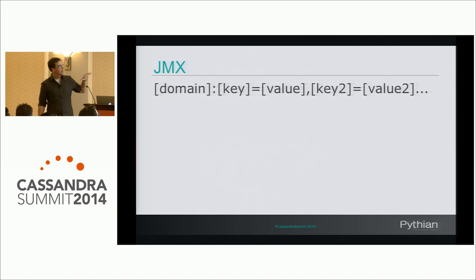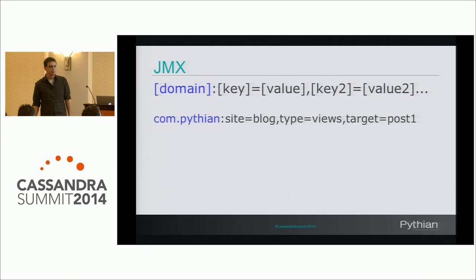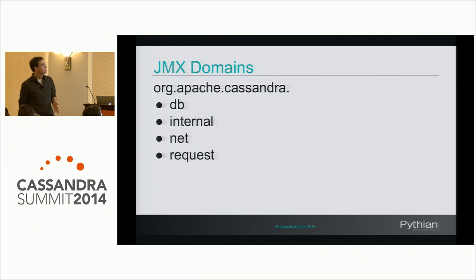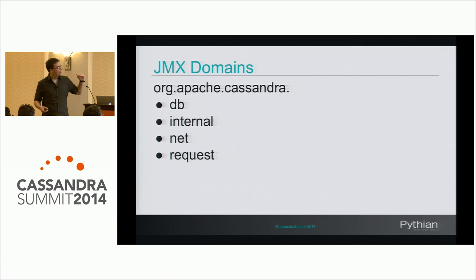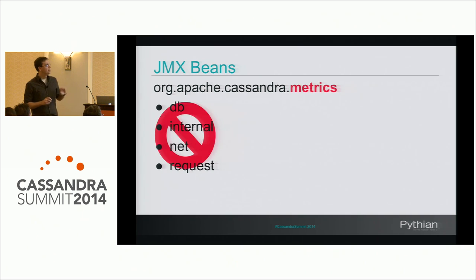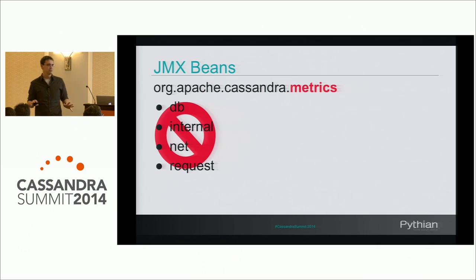JMX looks like this: there are beans — your objects — which have a domain and a series of key-value attributes. In Cassandra, there originally were four different domains: DB, internal, net, and requests. They're not deprecated, they still work, but as of around 1.1 they switched to a new domain called 'metrics' which contains all of the metrics you need. Everything is there — you don't need to access the old ones anymore.